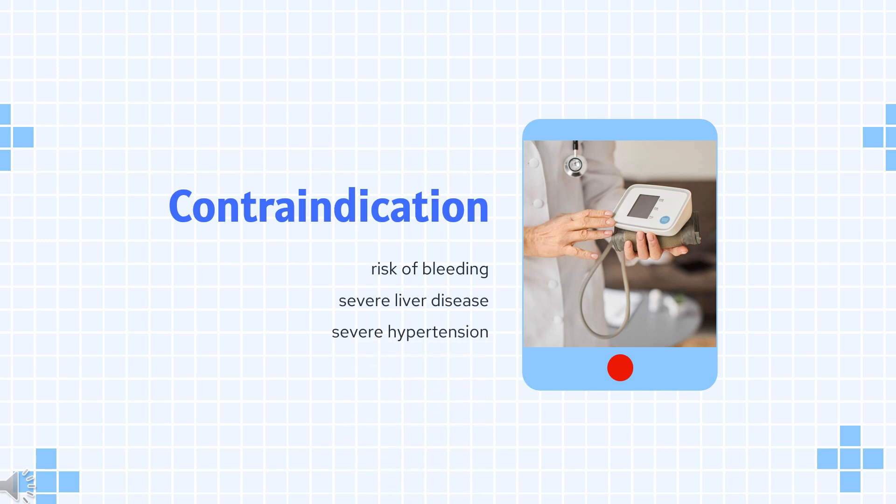Contraindication: Heparin is contraindicated in those with risk of bleeding, especially in people with uncontrolled blood pressure, liver disease, and stroke, severe liver disease, or severe hypertension.